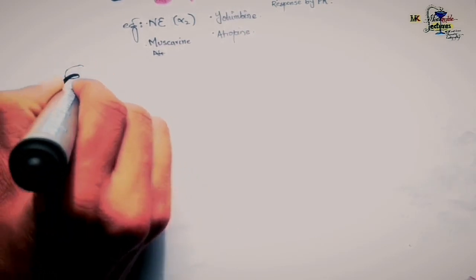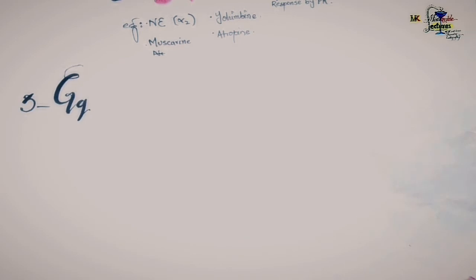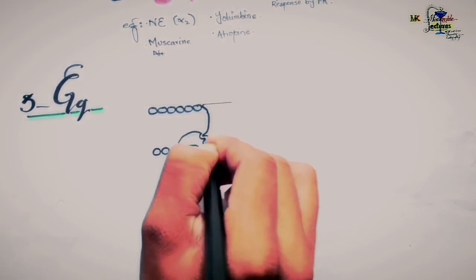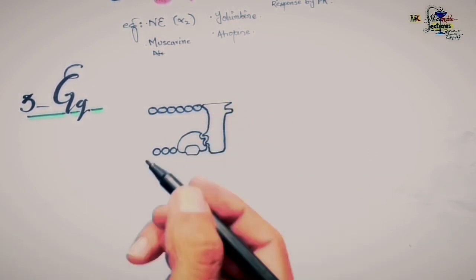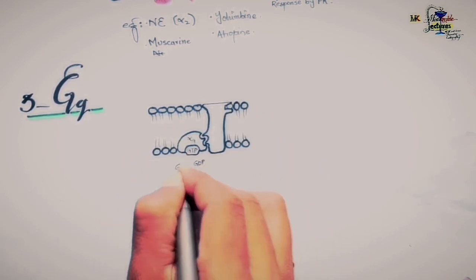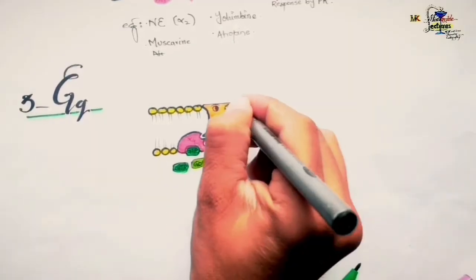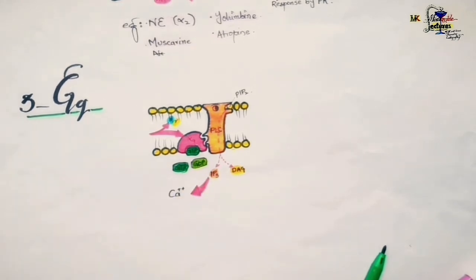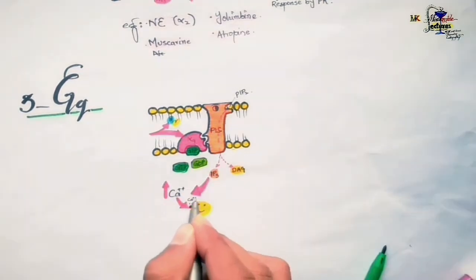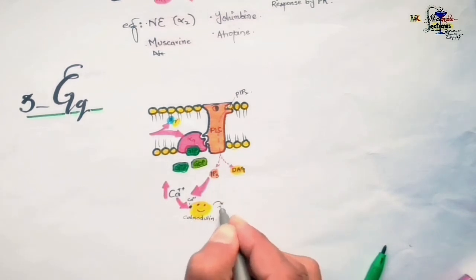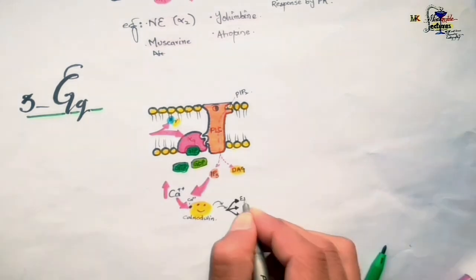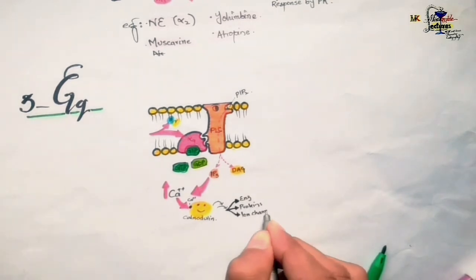The third type is Gq GPCR, which is entirely different from the above. When a ligand binds to the receptor, the alpha subunit — here called alpha-q — dissociates and interacts with phospholipase C in the cell membrane, which cleaves PIP2 into IP3 and DAG. IP3 causes an increase in intracellular calcium levels by releasing calcium from the endoplasmic reticulum. This calcium activates calmodulin inside the cell, triggering a cascade of reactions that results in alterations in enzyme activity, protein production, and ion channel conductance.